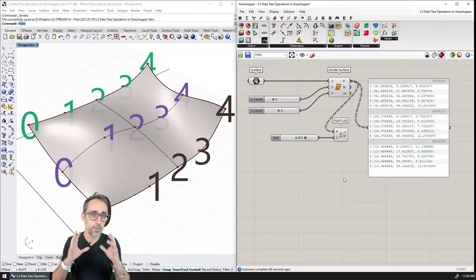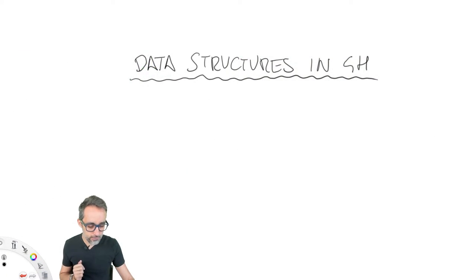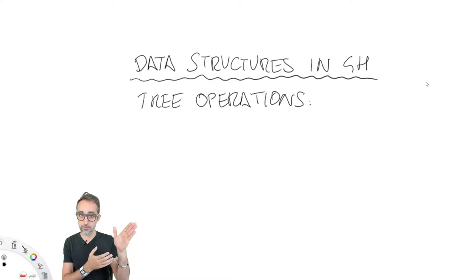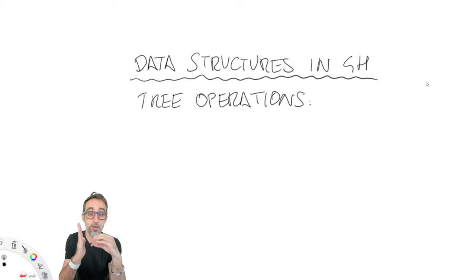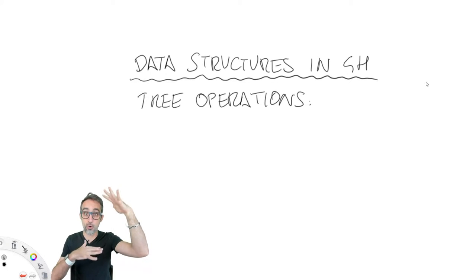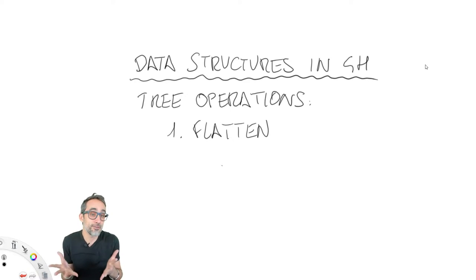I will make a case in the next video about why this makes sense and why this is interesting. In data structures in Grasshopper, we have two main operations that we can do at the tree level. In further videos down this playlist I will teach you other operations we can do at the list level, but these ones are going to change the structure of the whole tree. And the first one I would like to talk about, one of the most important ones, is called flatten.